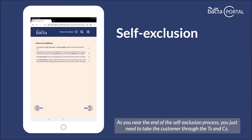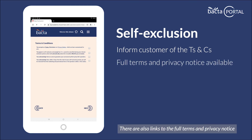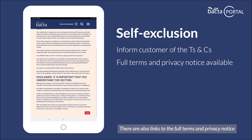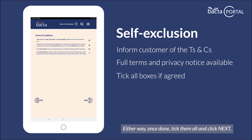As you near the end of the self-exclusion process, you just need to take the customer through the terms and conditions. Again, you can either read them out or hand the device to the customer to read. There are also links to the full terms and privacy notice. These can be reviewed if the customer so wishes. Once done, tick them all and click next.